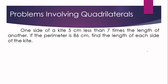For problem number 2: one side of a kite is 5 centimeters less than 7 times the length of another. If the perimeter is 86 centimeters, find the length of each side of the kite. What quadrilateral is stated in the problem? This time, we are talking about a kite, and we are looking for the length of each side.